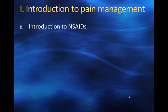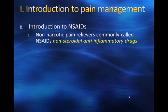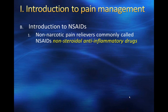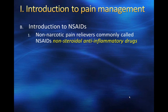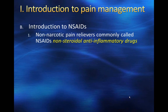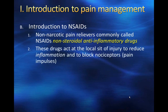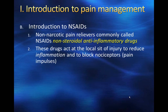Let's talk about non-steroidal anti-inflammatory drugs or NSAIDs. These non-narcotic pain relievers are called non-steroidal because steroids are often used to treat inflammation — they're a very powerful way to treat it. Corticosteroids or cortisone can be injected directly into an inflamed joint to treat arthritis or some sort of injury. Other oral steroids like methylprednisolone will often be used to treat inflammation associated with injury. These NSAIDs act at the local site of injury to reduce inflammation and to block nociceptors, which are pain impulses — the pain receptors that generate the pain impulse from the site of injury.